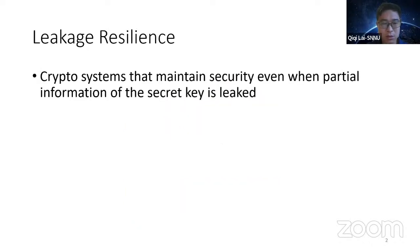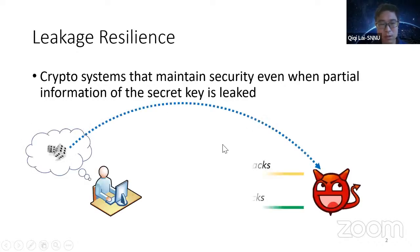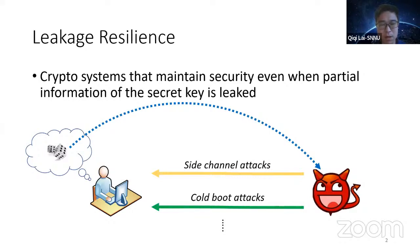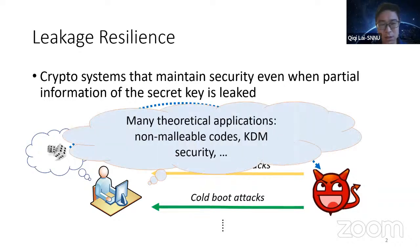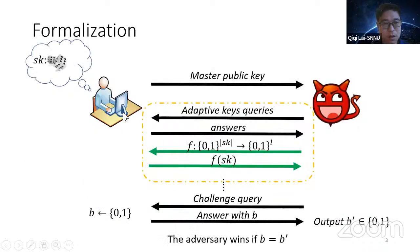Leakage resilience means that critical systems remain secure even when a partial secret key is leaked. In practice, a secure cryptosystem may be broken if a partial secret key is leaked. Leakage resilience can also be used to achieve security for more complicated cryptosystems such as non-malleable codes and KDEM security. Formally, leakage resilience is described by a security experiment between the challenger and the adversary: the challenger sends the master public key to the adversary, who can conduct key extraction queries and key leakage queries adaptively, before issuing a challenge query where the challenger responds with a random bit B. The adversary wins if it outputs B' equal to B.